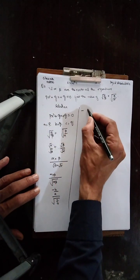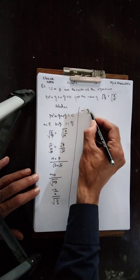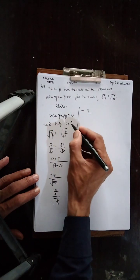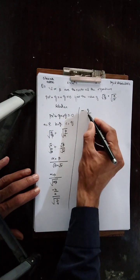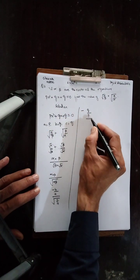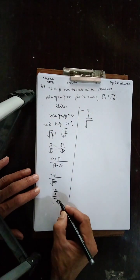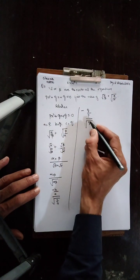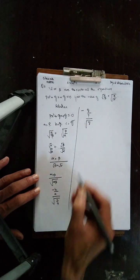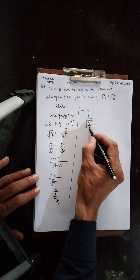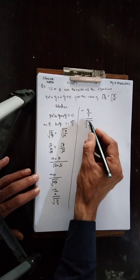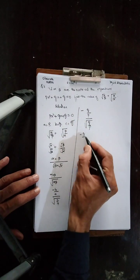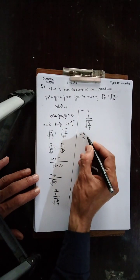Values substitute کریں: b کی جگہ q اور a کی جگہ p رکھیں گے تو numerator میں −q/p آئے گا۔ c کی جگہ q اور a کی جگہ p رکھیں گے تو denominator میں √(q/p) آئے گا۔ یہ الٹا ہو جائے گا: −q/p ÷ √(q/p)۔